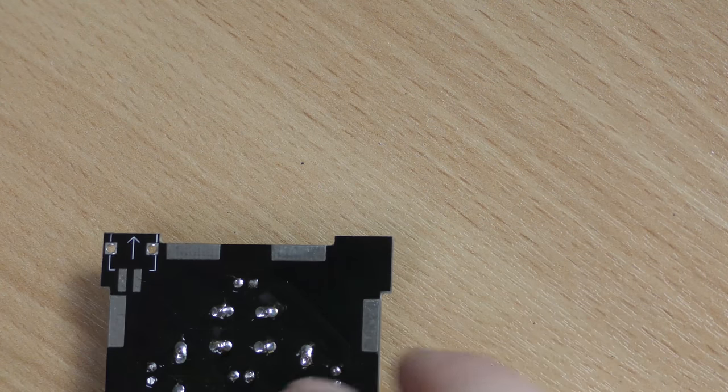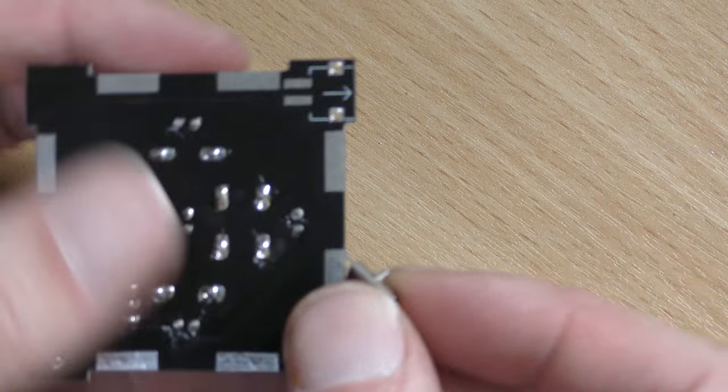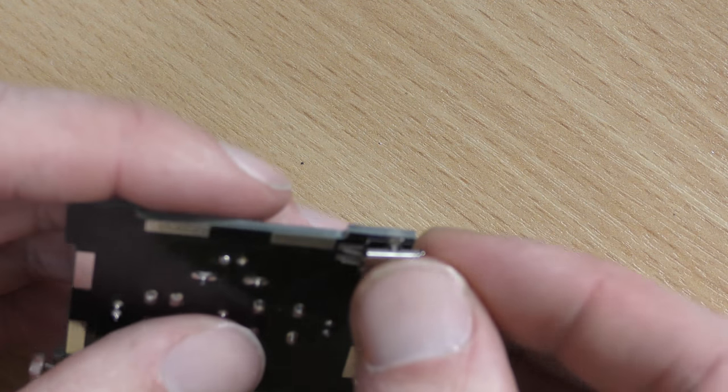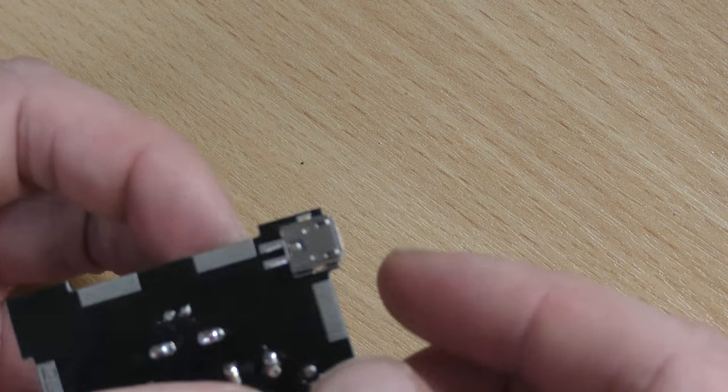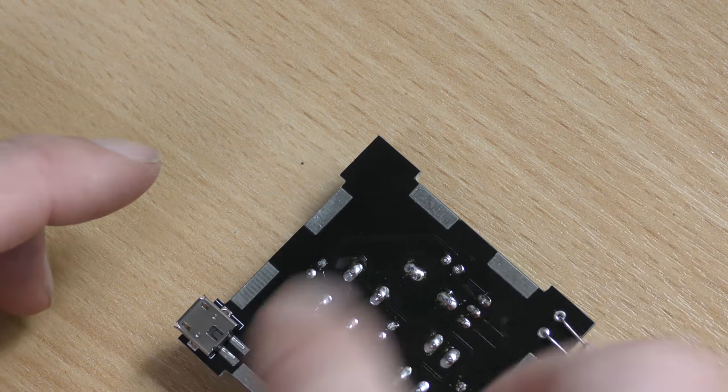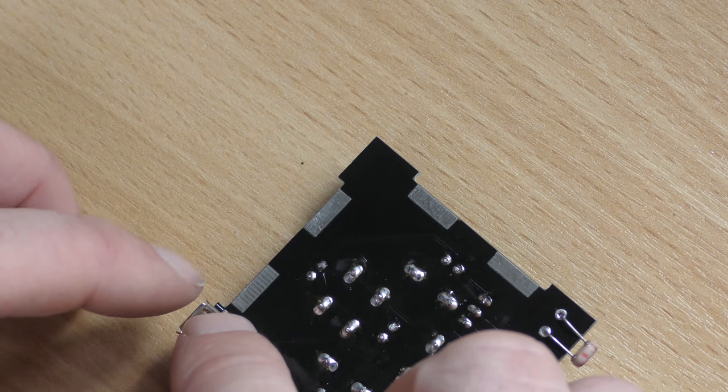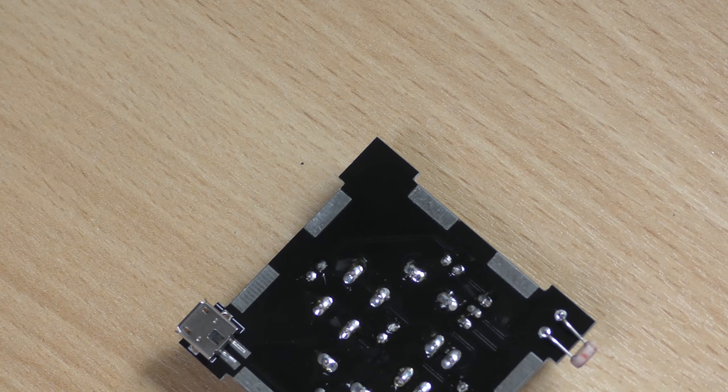And then we've got the USB connector, which is here. This also goes in the bottom. It's got two little locating lugs. Those will go through the holes there. And you can see it sits on those two pads. So it's a surface mount part, but it's not actually that difficult to solder.